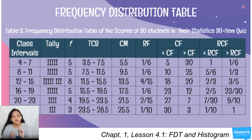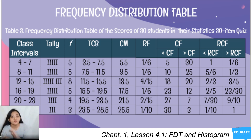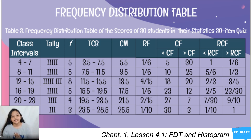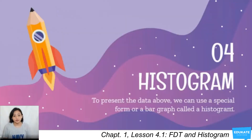Relative cumulative frequency (RCF) works the same way but uses relative frequencies instead. For greater-than RCF, start from the top: 1/6, then 1/6+1/6=2/6 or 1/3, then 1/3+4/15=3/5, then 3/5+1/6=23/30, then 23/30+2/15=9/10, then 9/10+1/10=1. For less-than RCF, start from the bottom row and accumulate upward in the same manner.